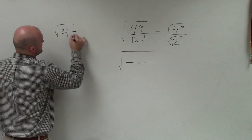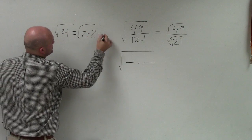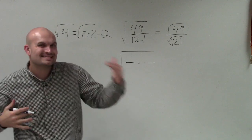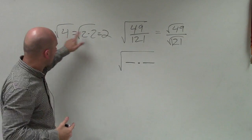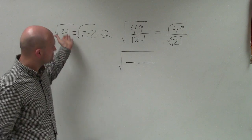Because remember, the square root of 4 is equal to the square root of 2 times 2, which is just equal to 2. What number multiplied by itself gives us 4? 2 times itself equals 4.